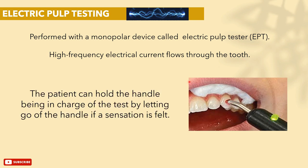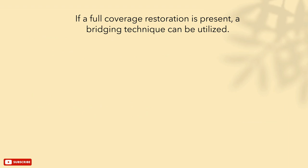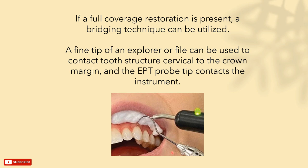You can also let the patient hold the handle to control and activate the current flow. If a full coverage restoration is present, like zirconia or e.max crowns, a bridging technique can be used. You can use a fine tip explorer or file and contact the tooth beneath the margin of the restoration in the cervical area, and the electric pulp tester probe tip contacts that metal instrument so the current flows through to the tooth. Some electric pulp testers also have a micro-thin tip that can be used directly on the tooth.